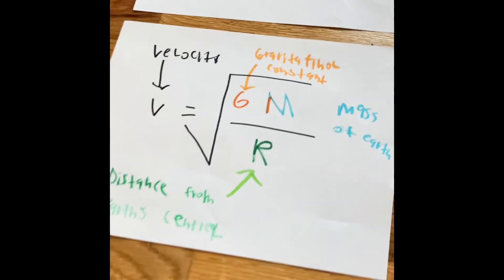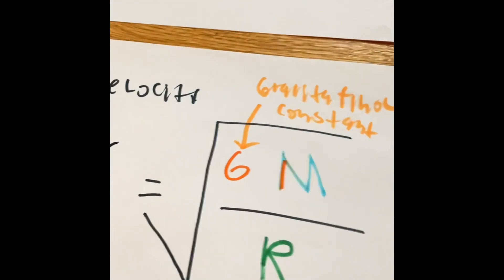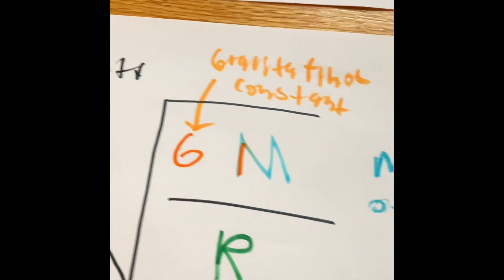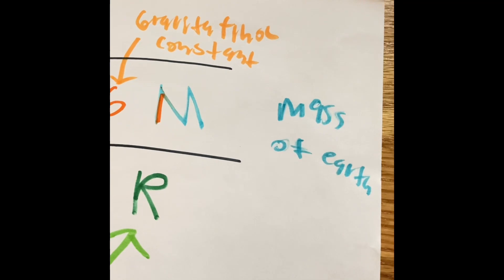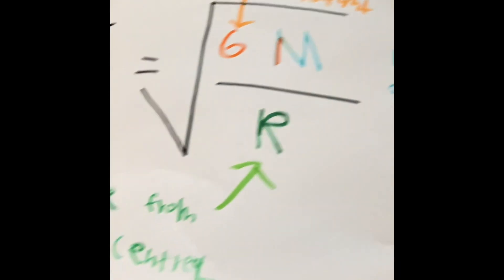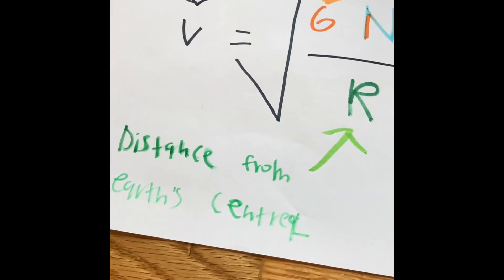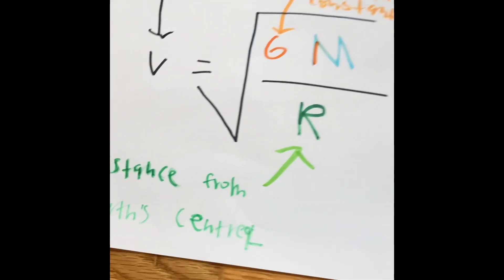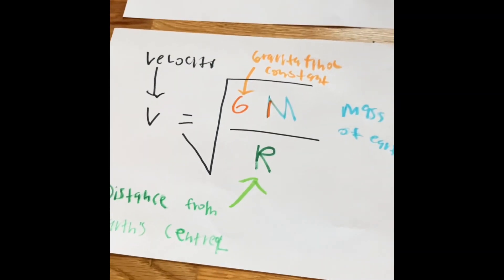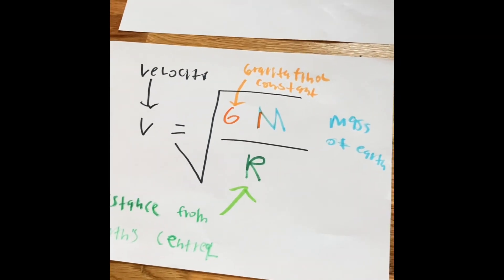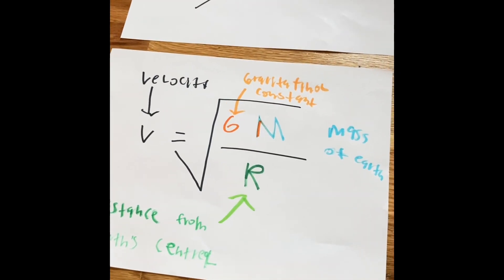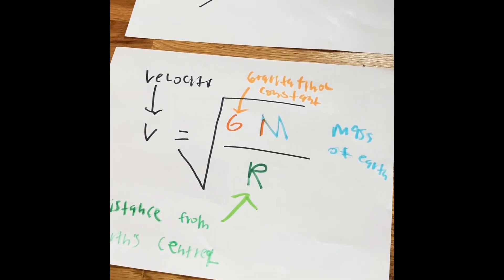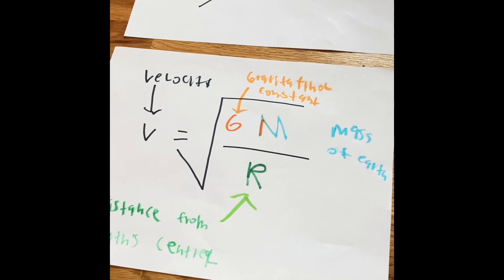But wait — what is the gravitational constant? What is the mass of the Earth? And what is the distance from the Earth's center? What are those definitions? We're going to understand what those three things are.